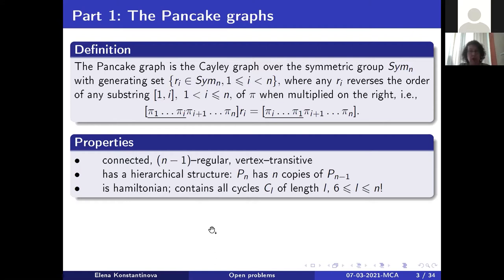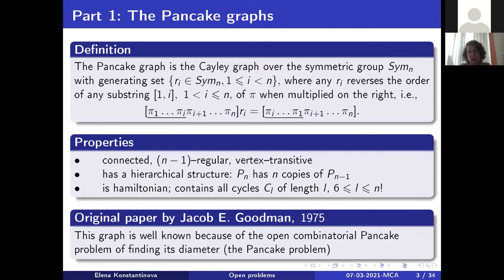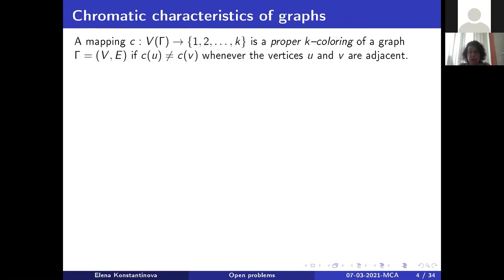The pancake graph has a very nice hierarchical structure, meaning that Pn — the pancake graph over the symmetric group of degree n — has n copies of the previous pancake graph Pn minus one as induced subgraphs. This graph is Hamiltonian and contains all cycles of lengths l, where l starts from six up to n factorial. The name came from the well-known open combinatorial problem of finding the diameter of this graph, known as the pancake problem.